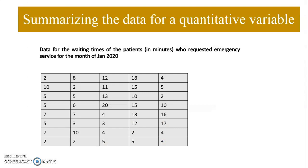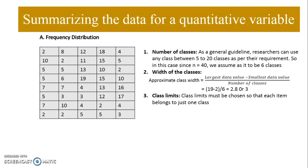When it comes to summarizing data for a quantitative variable, for example, we have data on the waiting time of patients in minutes who requested emergency service in the month of January 2020. This data is in minutes and is for a sample of 40 patients. The first way of summarizing this is frequency distribution, and while the same definition applies as in the categorical case, there are certain steps we must follow.